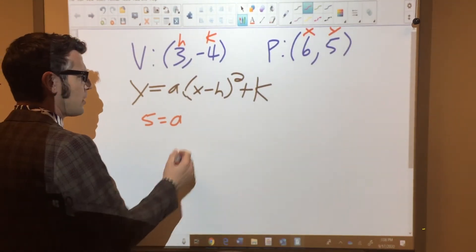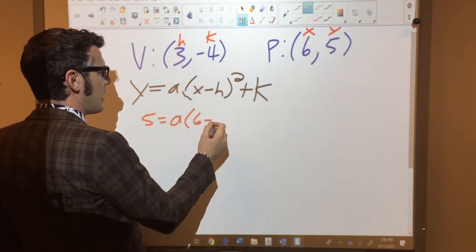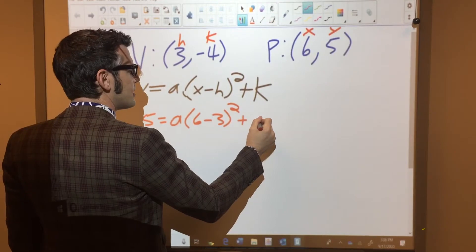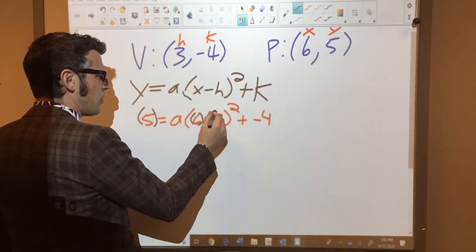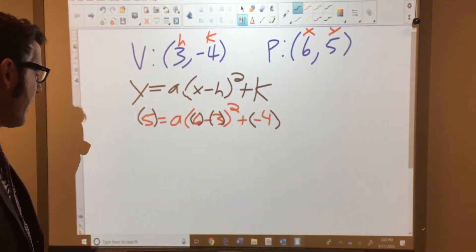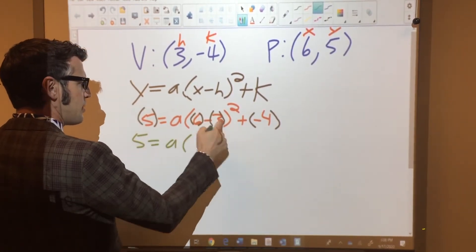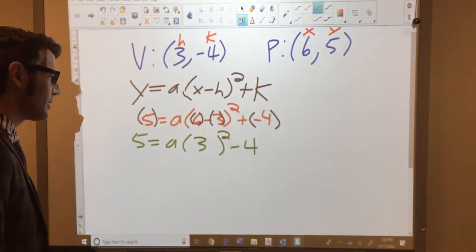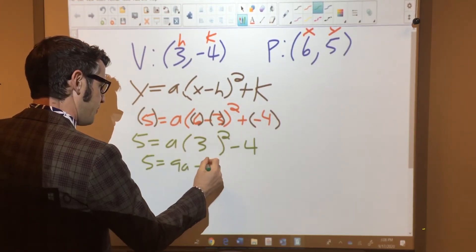But anyway, so we don't have a, but we know that x is 6. We know that h is 3 squared plus negative 4, and I should have put parentheses around everything. You're probably thinking, well, it doesn't really matter for this problem. And you're right, but it's cleaner if I do that. So 5 equals a. This is going to be 3 squared minus 4. I'm simplifying my signs there.